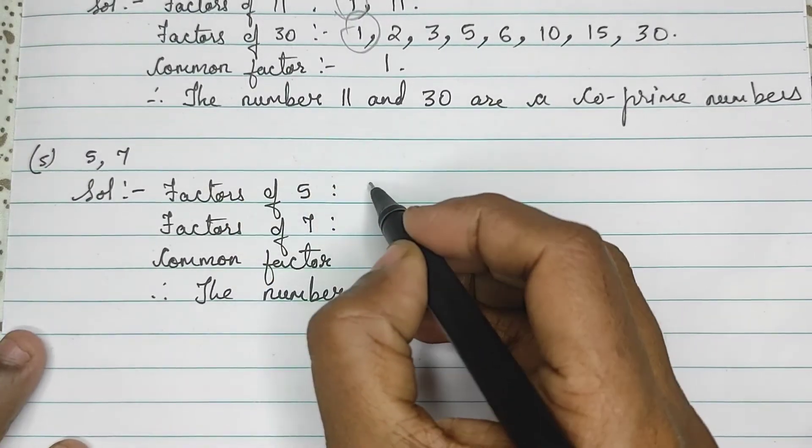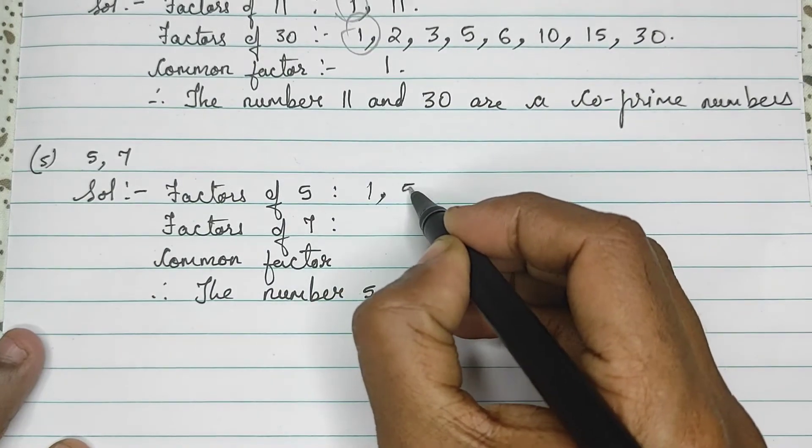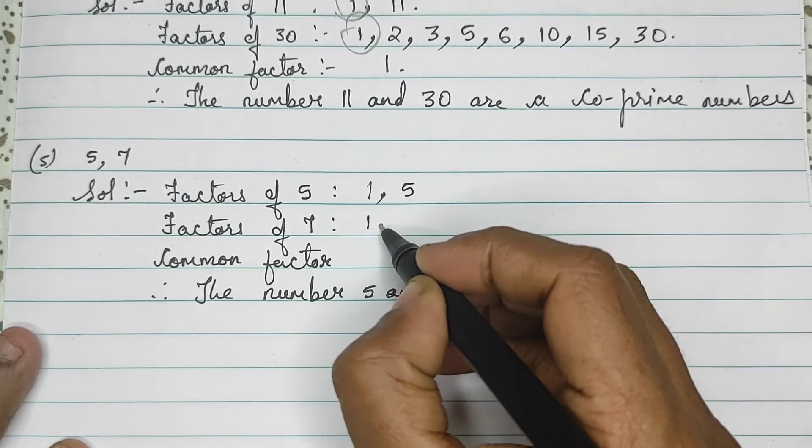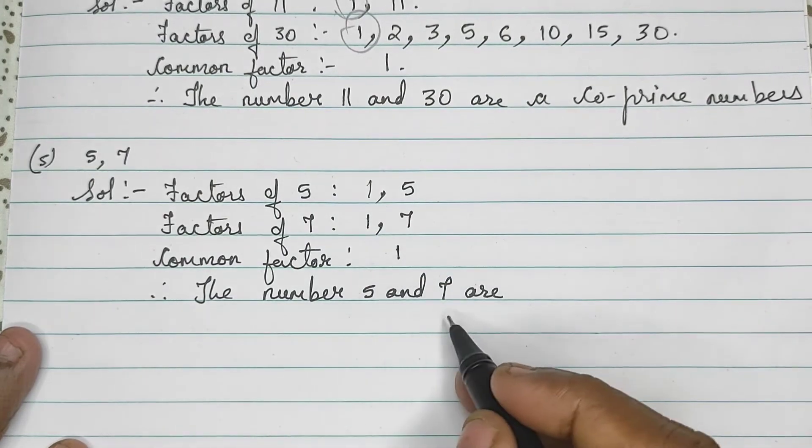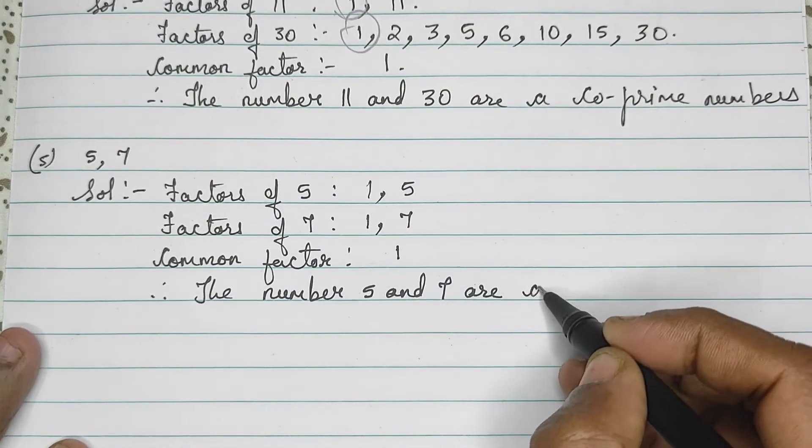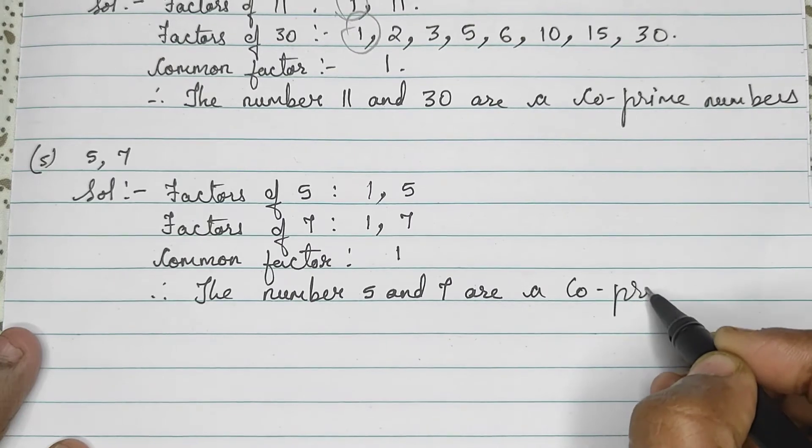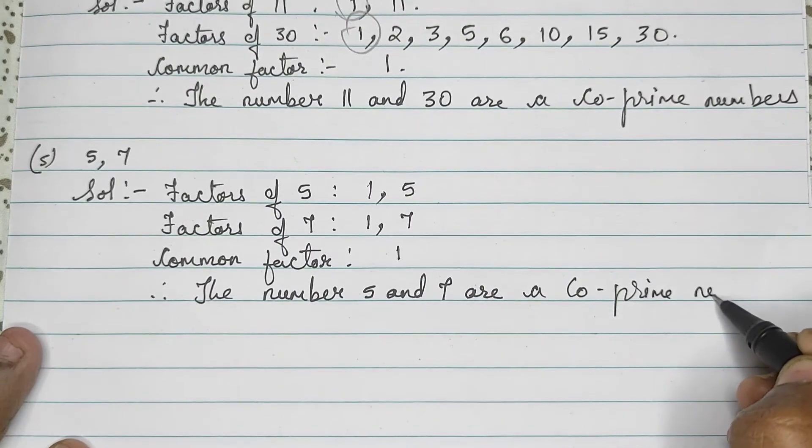Fifth sum. Factors of 5: 1 and 5. Factors of 7: 1 and 7. Common factor is 1. So, the numbers 5 and 7 are co-prime numbers.